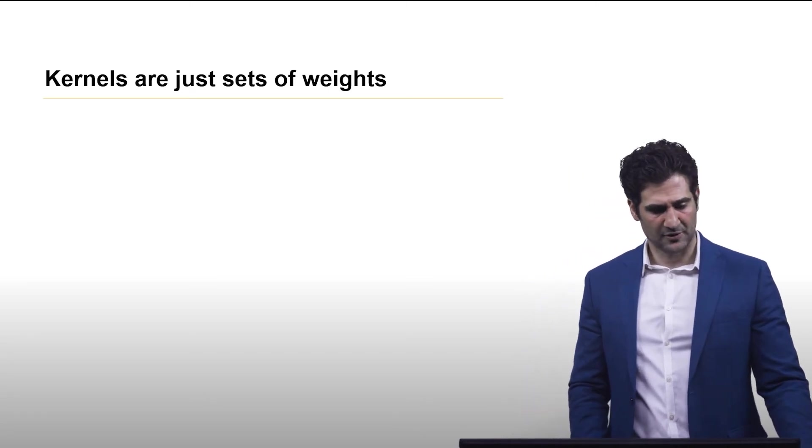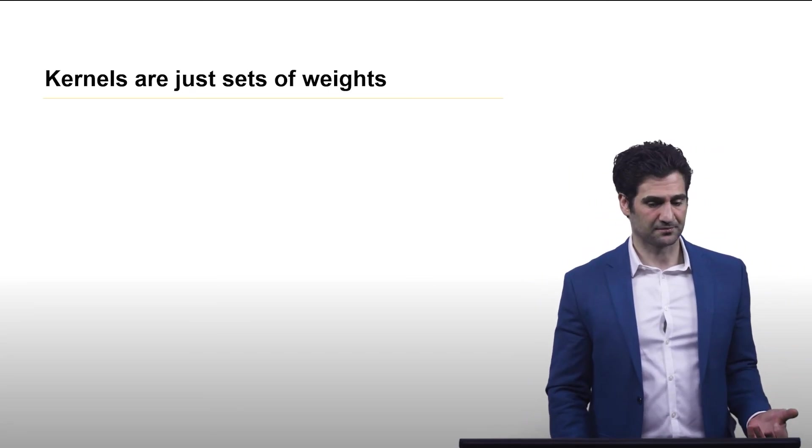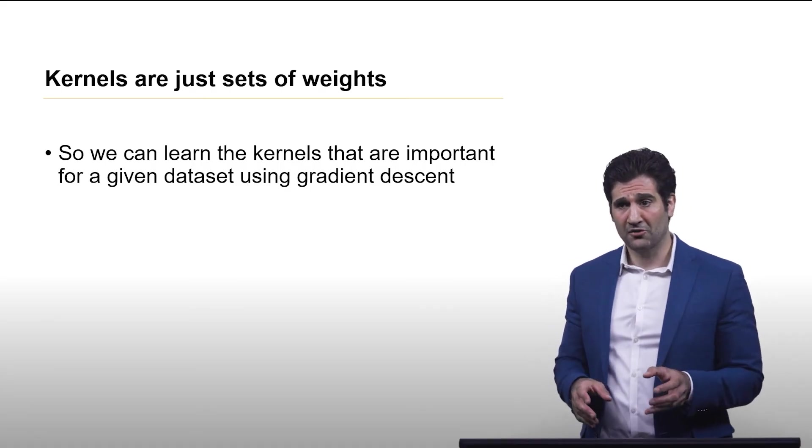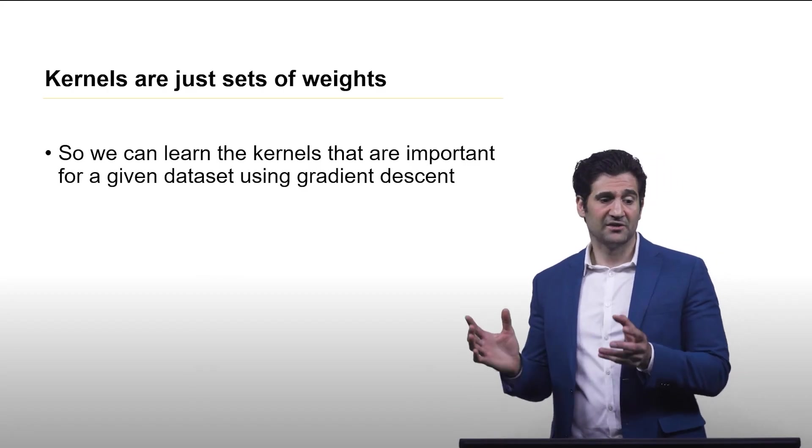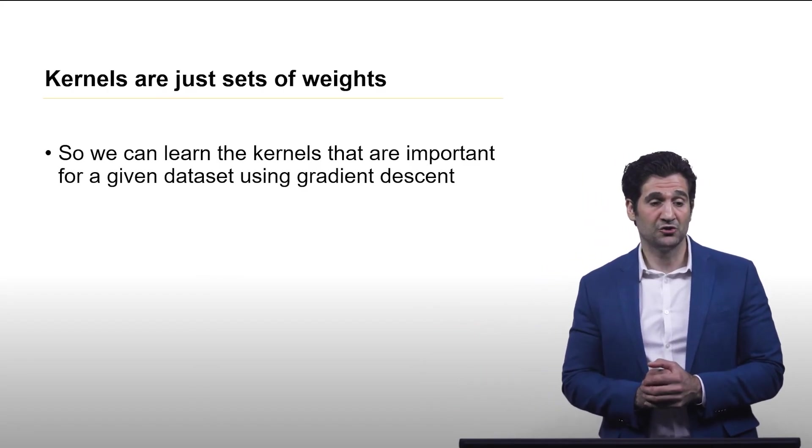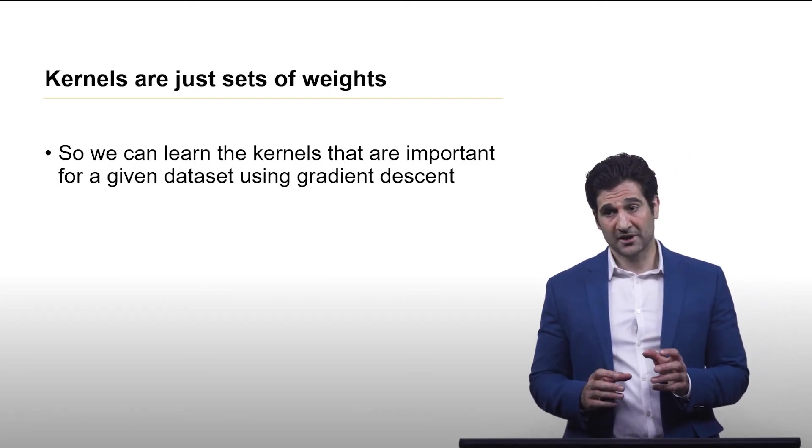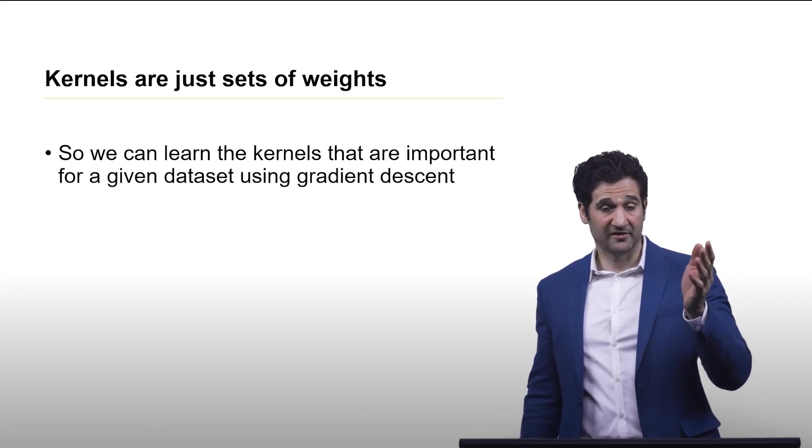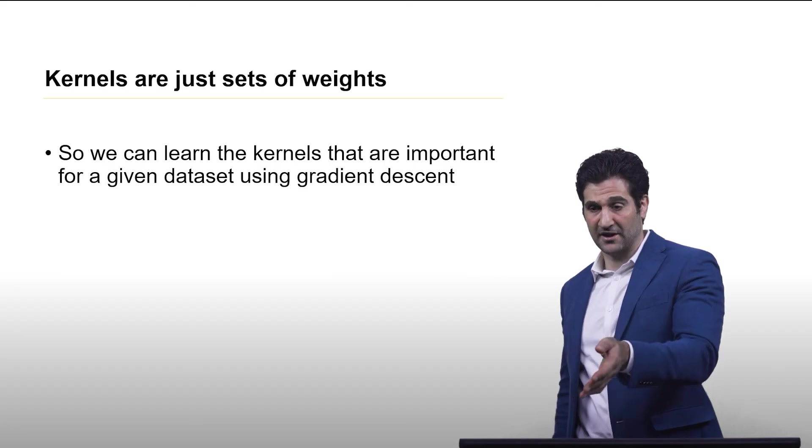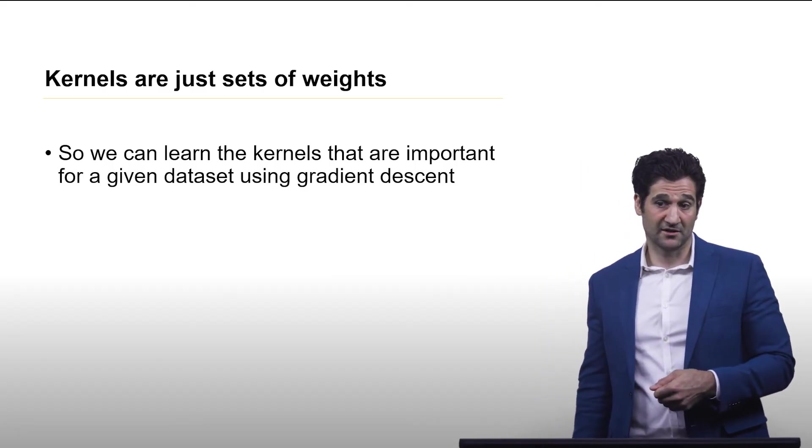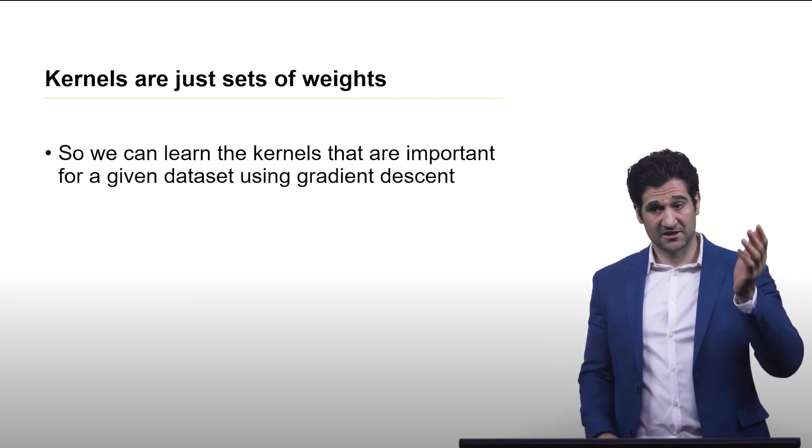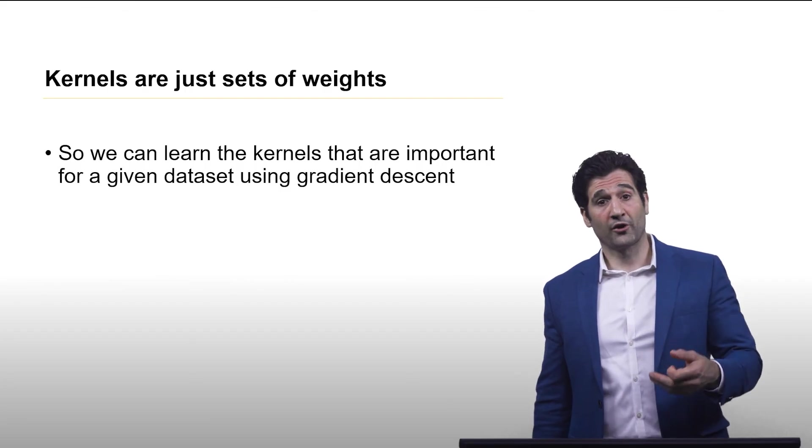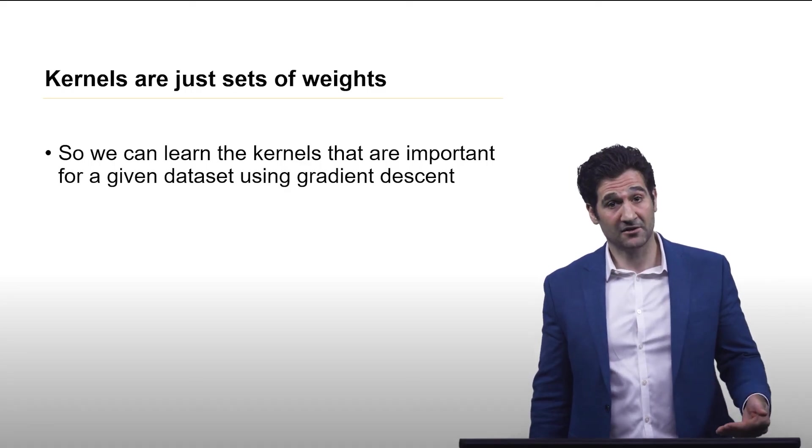Now the thing to keep in mind is kernels are just sets of weights. So the trick with using kernels in a neural network is this is a way to learn those weights using gradient descent. Instead of specifying my three vectors of negative 1, 1, and negative 1 again because I say that's a line, I just say there's 9 weights. I don't know what those values are. We're going to rely on gradient descent to figure that out for us.